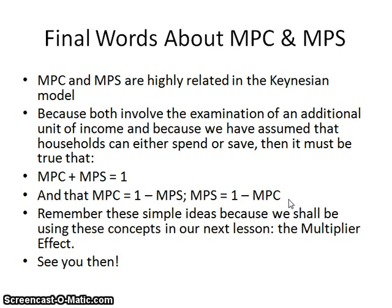A few final words about MPC and MPS, because these are the two variables you're very likely to see on the AP examination. You don't see many questions about APC and APS — it's mostly the marginal topics that are tested. They're highly related to the Keynesian model. Because households can either spend or save additional income, it must be true that MPC + MPS = 1, that MPC = 1 − MPS, and that MPS = 1 − MPC. Remember these simple ideas because we'll be using them in our next lesson, which is called the multiplier effect. We'll see you then.